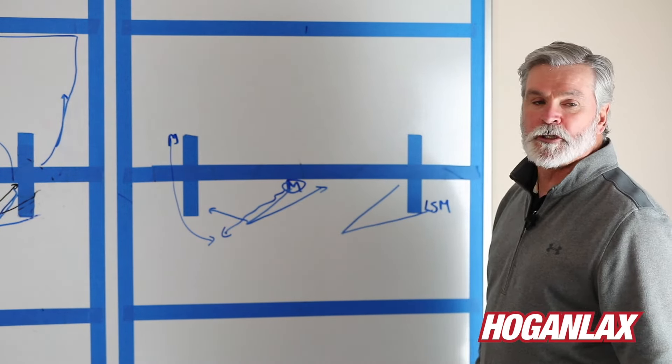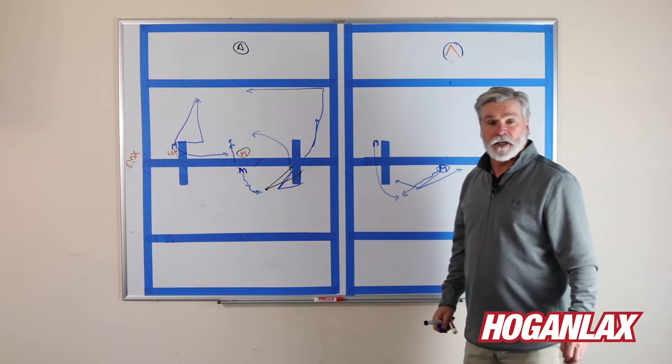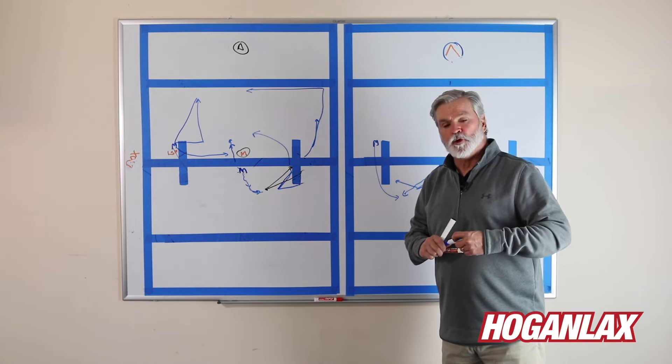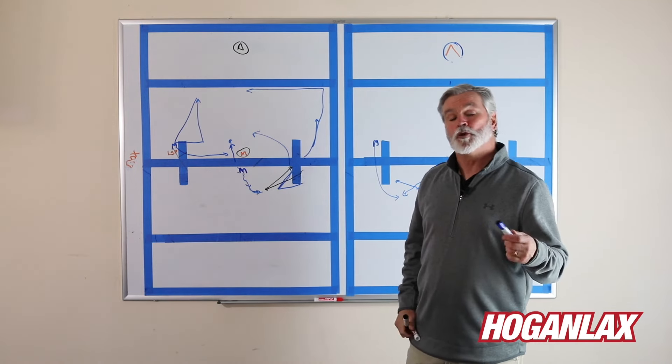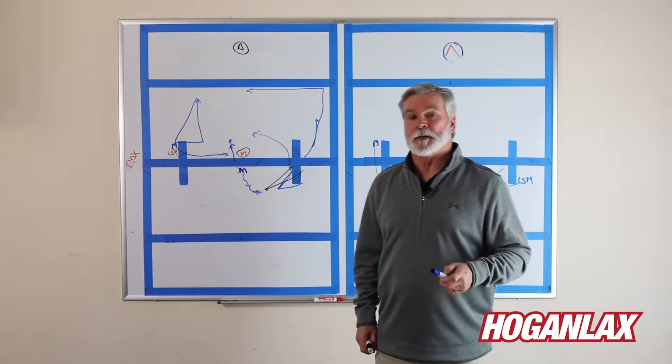So never crisscross your three, your wing guys and your face-off guy when you're facing off. It's a real simple rule, and you should watch that. If teams do crisscross, then you should look, take the opportunity to potentially double team them.